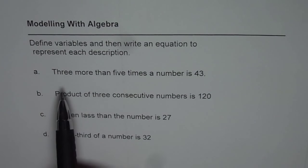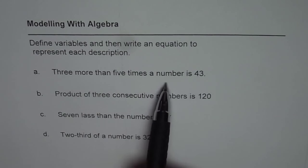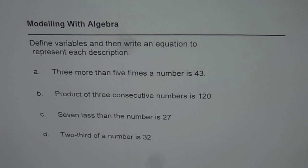A is 3 more than 5 times a number is 43. B is product of 3 consecutive numbers is 120.